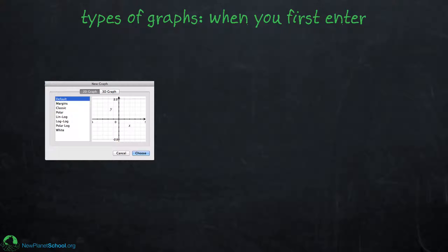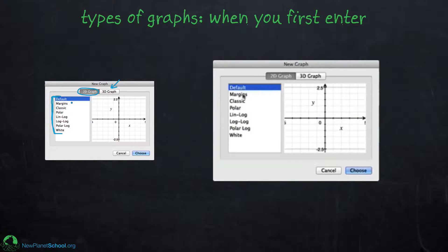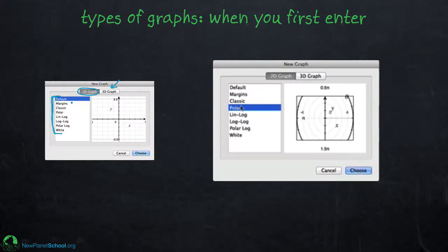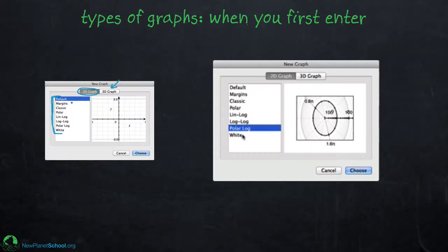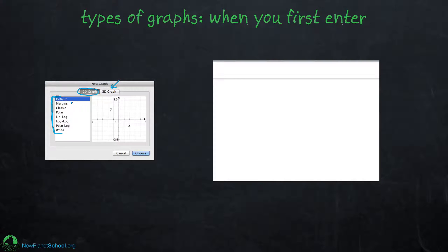The first customization when you enter Grapher is whether you want a 2D or 3D graph. This video focuses entirely on 2D graphs. Right when you open a new graph you have choices for what type of graph you want — classic, polar, linear, log-log, polar log, and pure white — giving you your first level of customization immediately.